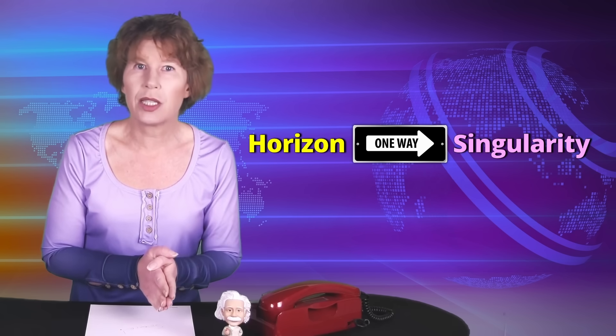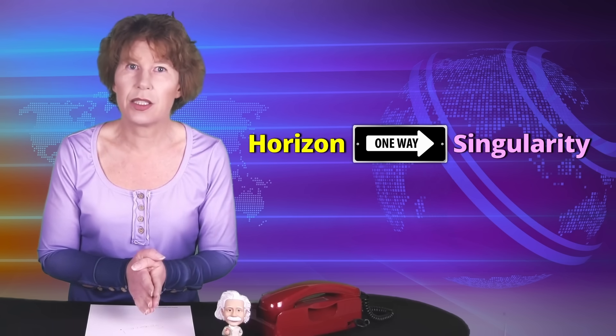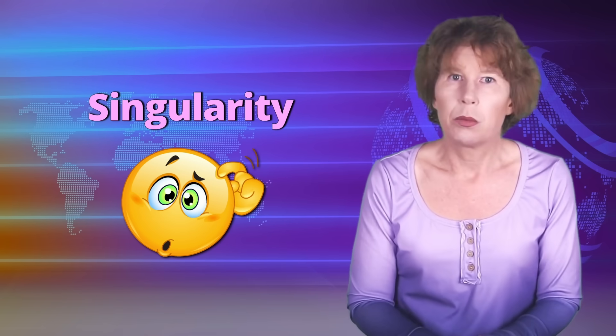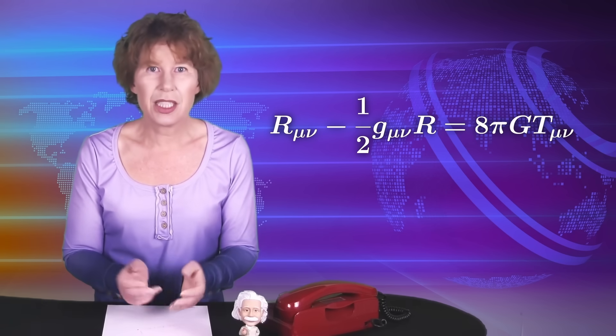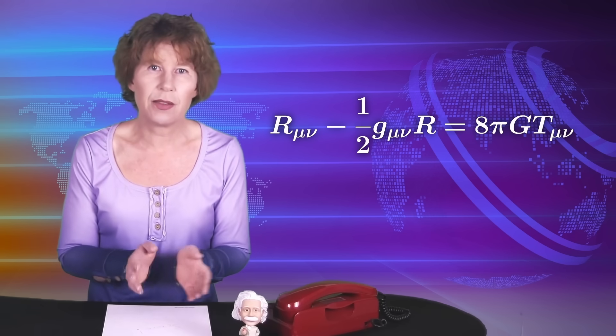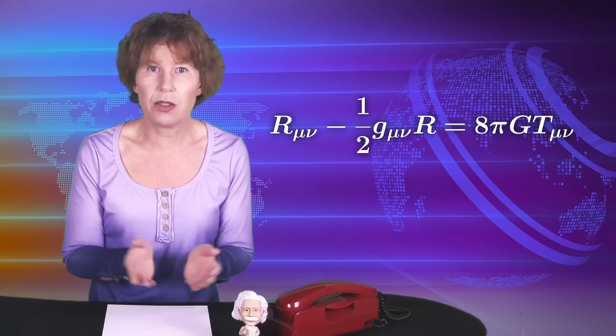Once you've crossed the black hole horizon, there's no escaping this fate. But what is the singularity? Mathematically, the singularity is a place where time ends. In black holes, it's also accompanied by an infinite curvature of space-time. But most physicists, me included, think that this isn't actually what happens in a black hole. Rather, the singularity is probably just an indication that the mathematics of Einstein's theory breaks down.